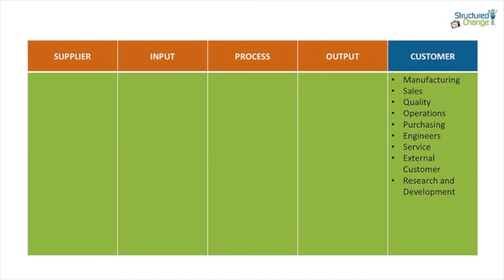In our workshop, you can see here we looked at manufacturing, sales, quality, operations, and purchasing among others — those who were identified as recipients of the processes that engineering performs. If you're doing a workshop that runs for a day, you could normally have this knocked out in about half an hour to an hour. This is one of the easier elements of a SIPOC to perform.